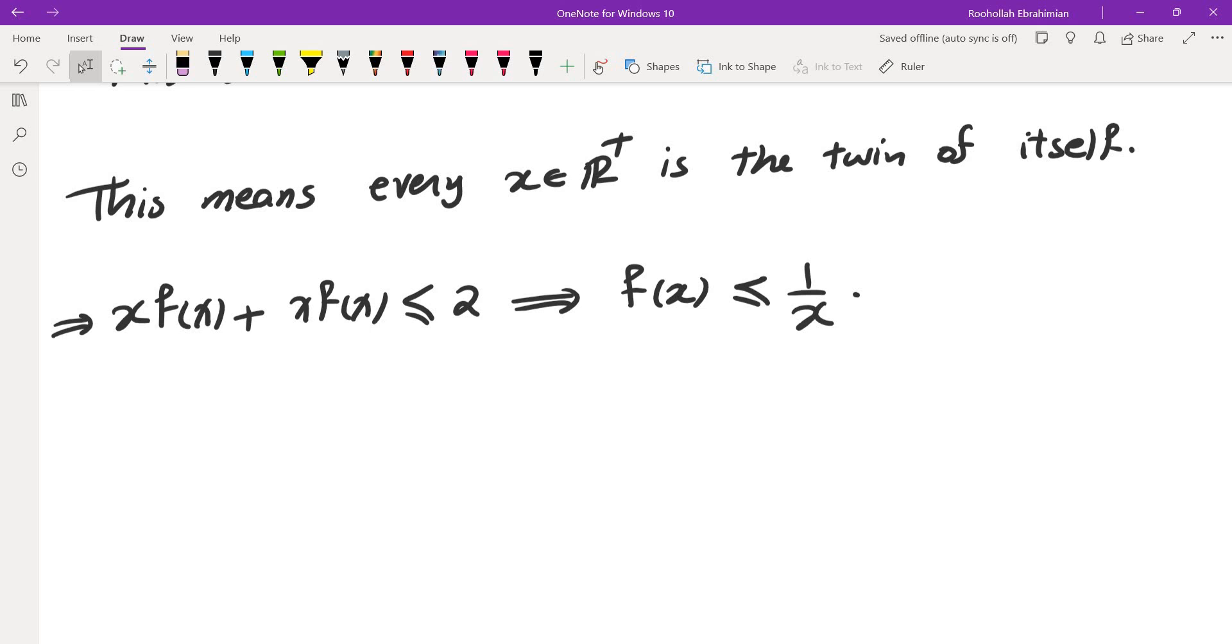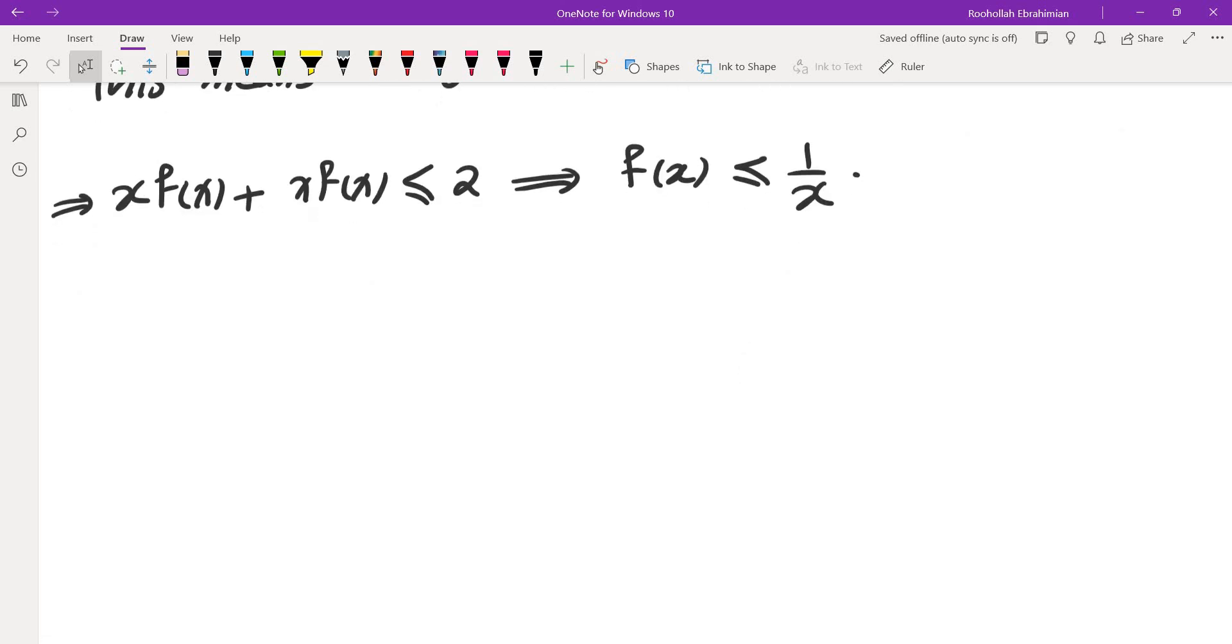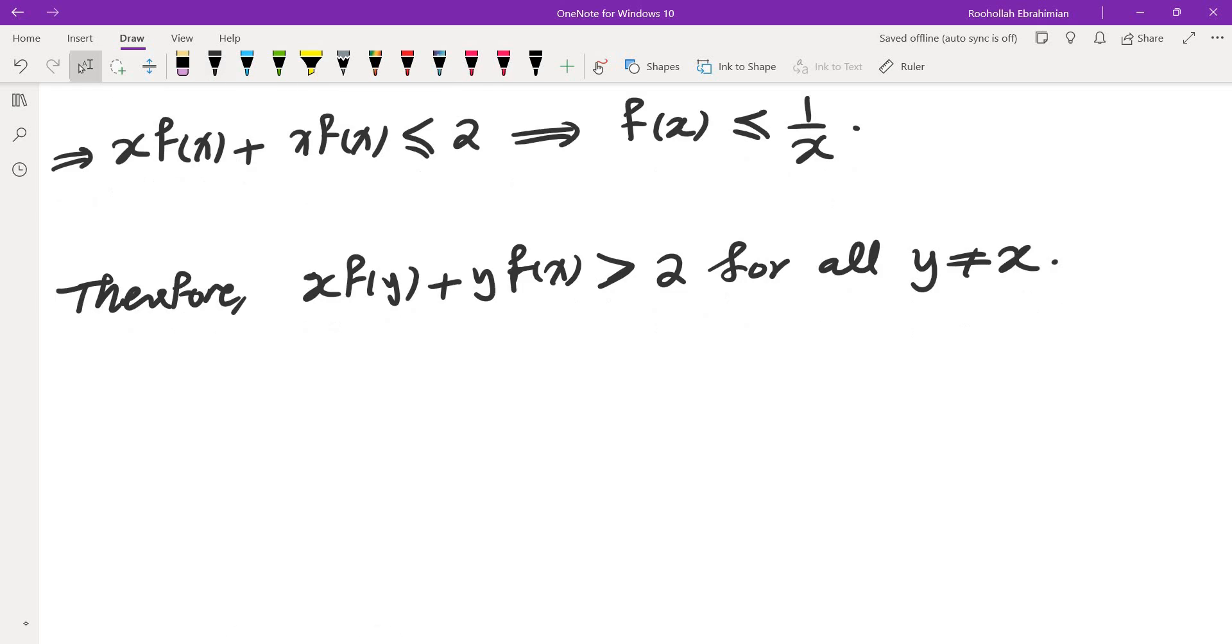Let's see what happens if I write down the inequality using the uniqueness. So this means by uniqueness, xf(y) plus yf(x) is greater than 2 for all y not equal to x. So this tells us I'm going to take all the y's to the right side and see what we get. We get f(x) is greater than 2 minus xf(y) over y.